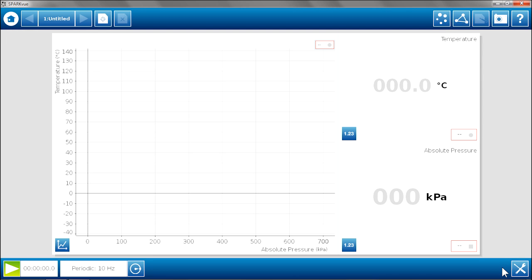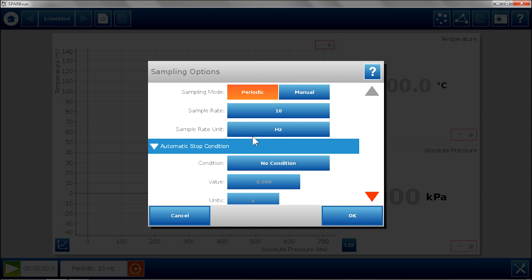Now I am almost ready to start collecting data. I want to do this in manual sampling mode. I want to make sure my values are stable before I collect a point. I am going to change the sampling option to manual. Now I am ready to start collecting data.